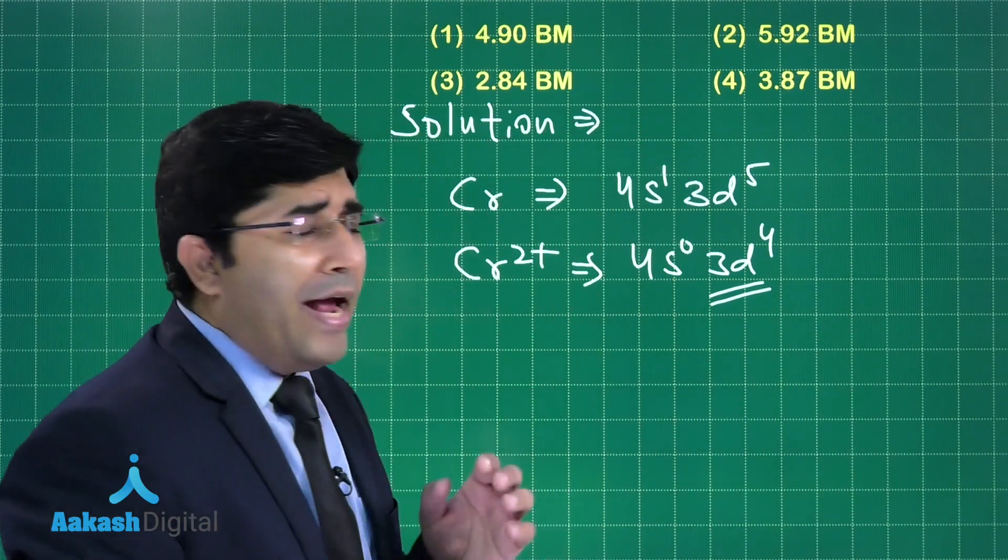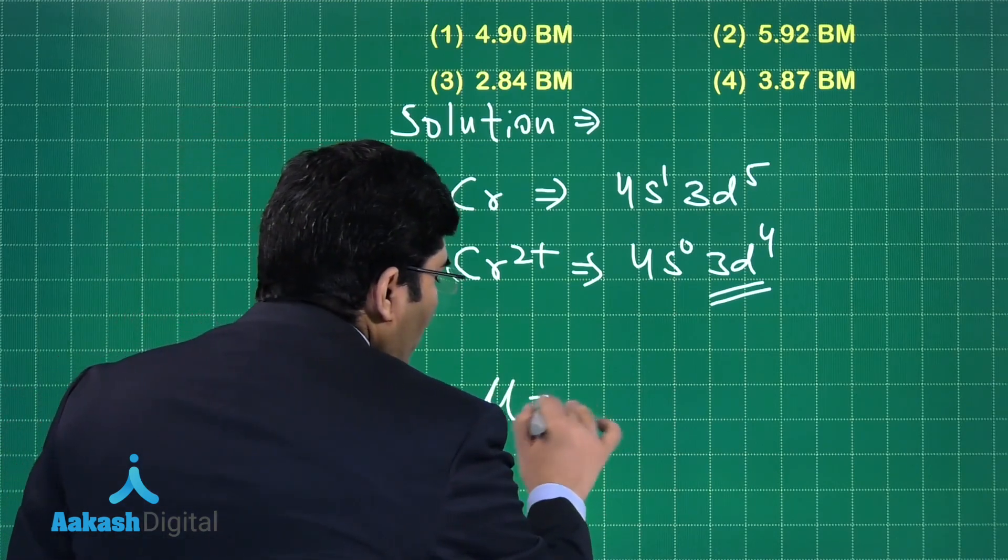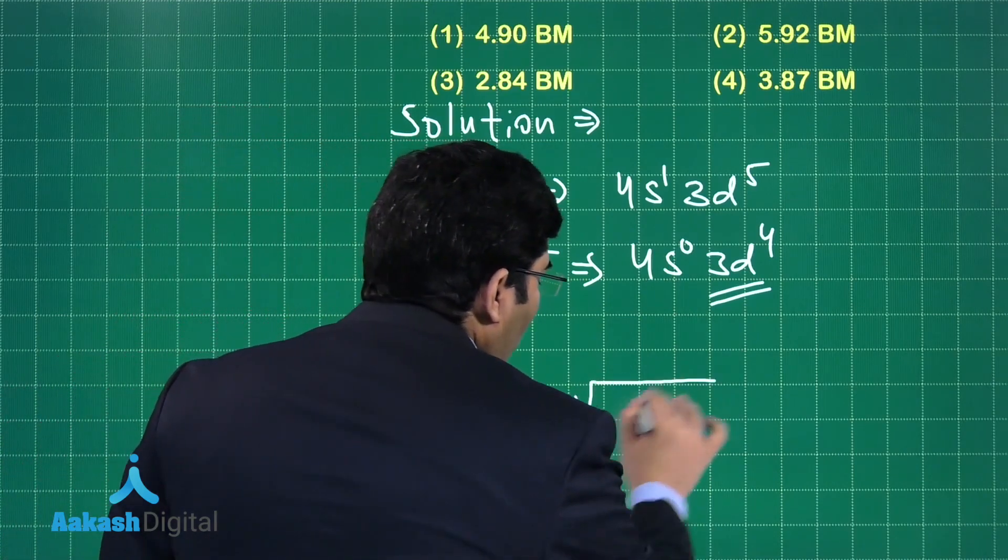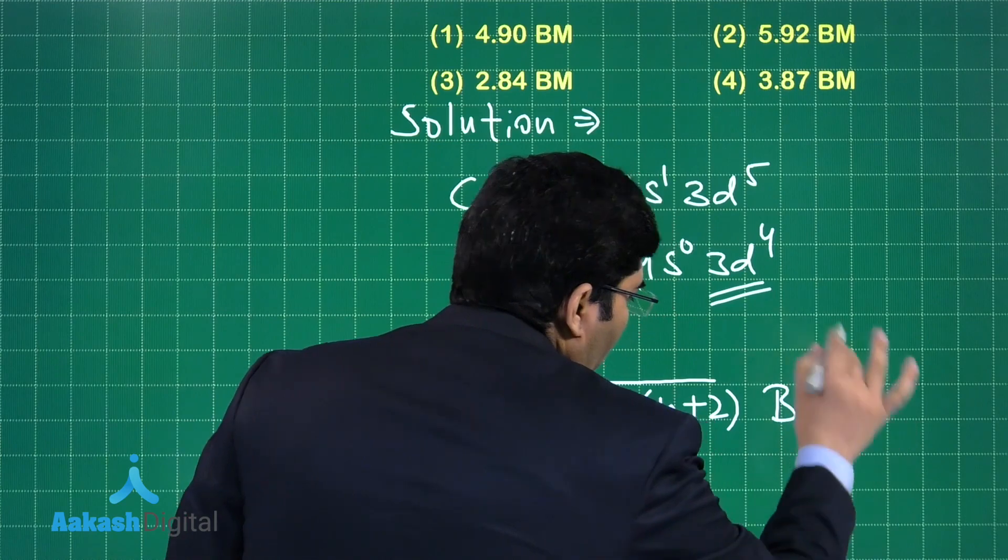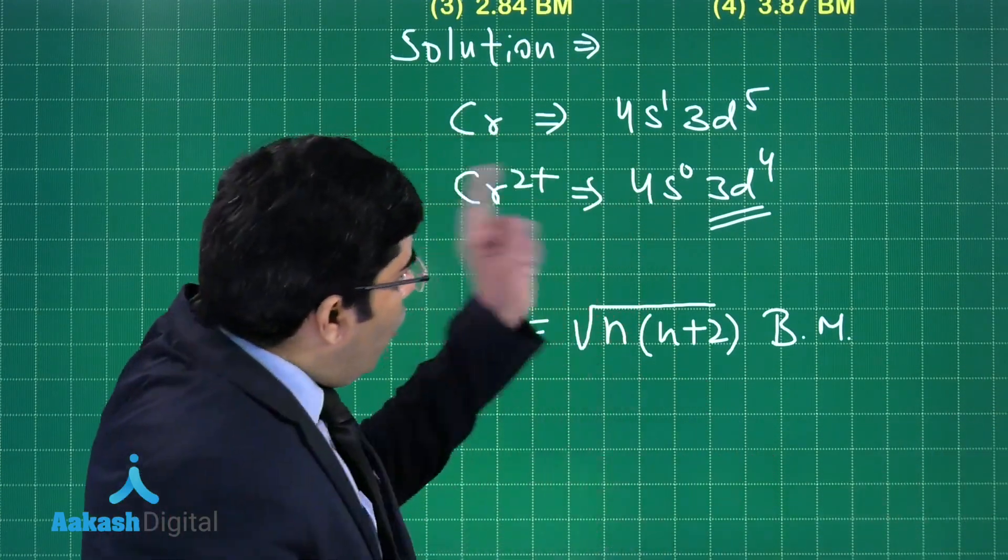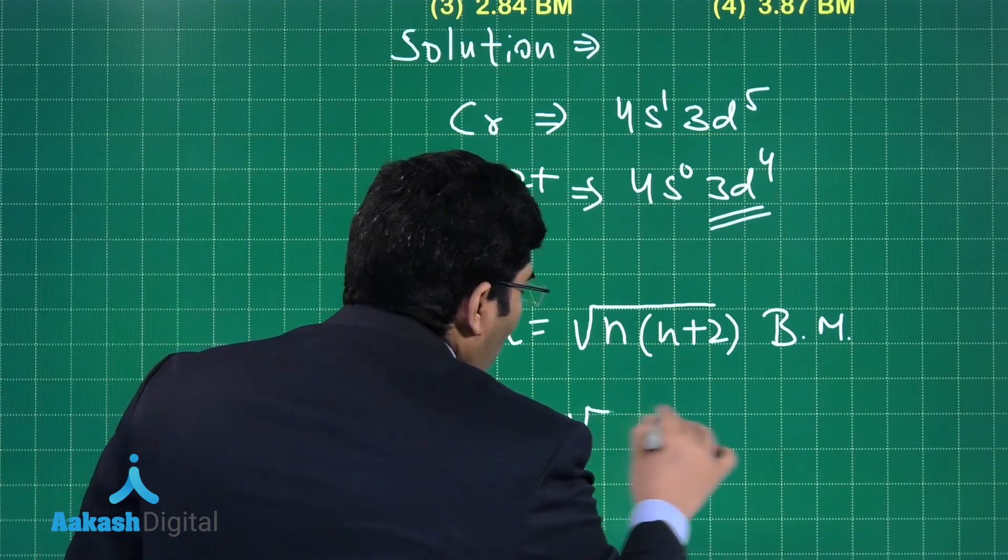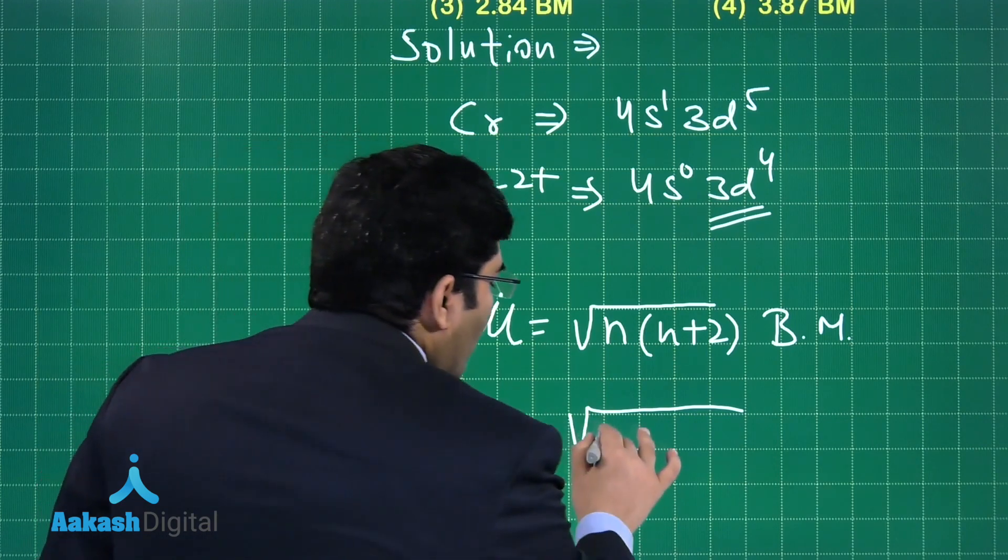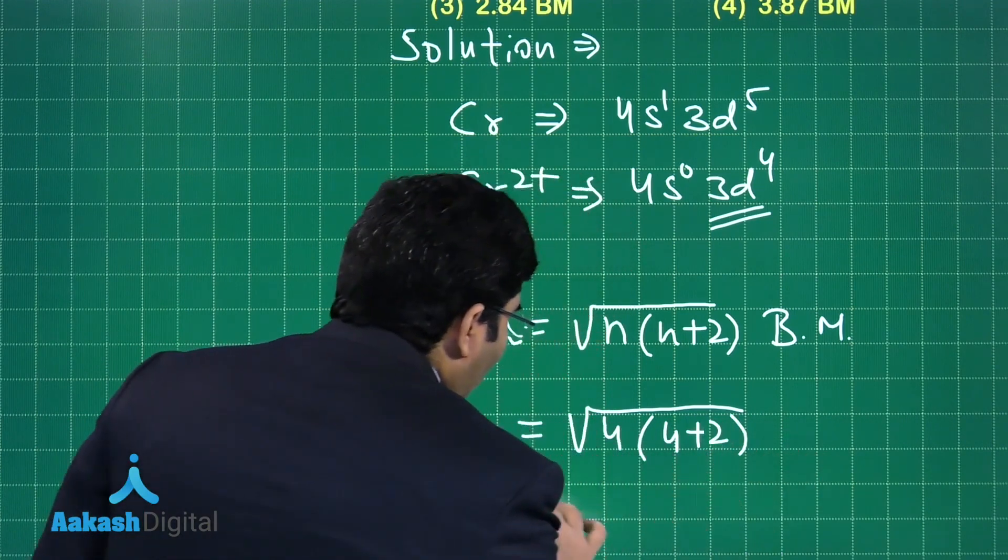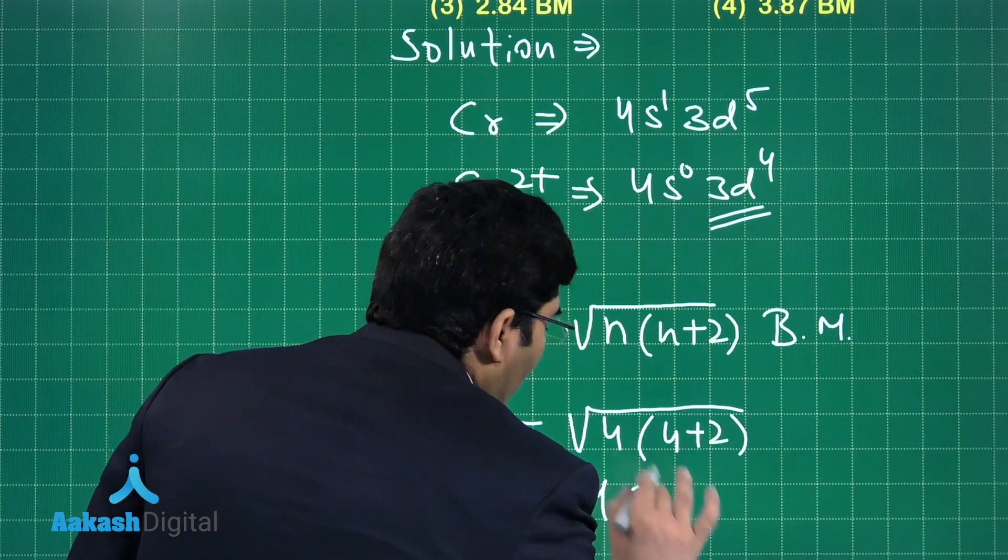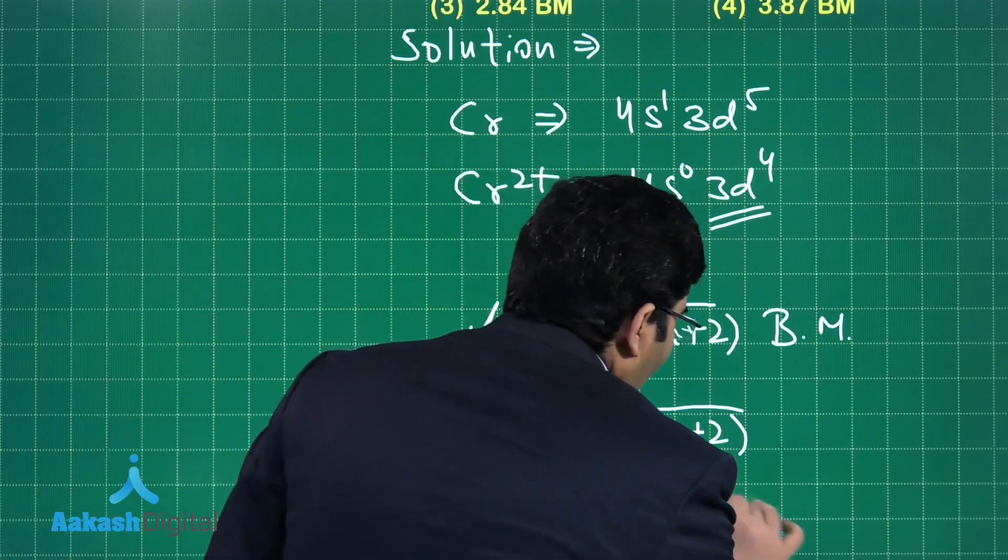If you want to find out the magnetic moment, the formula is μ, that is magnetic moment, equals √n(n+2) Bohr magneton. Four unpaired electrons are there, and when we will put the value of n—n is the number of unpaired electrons, that is 4 multiplied by 4+2—and when we will solve it, it will become 4.9 approximately.